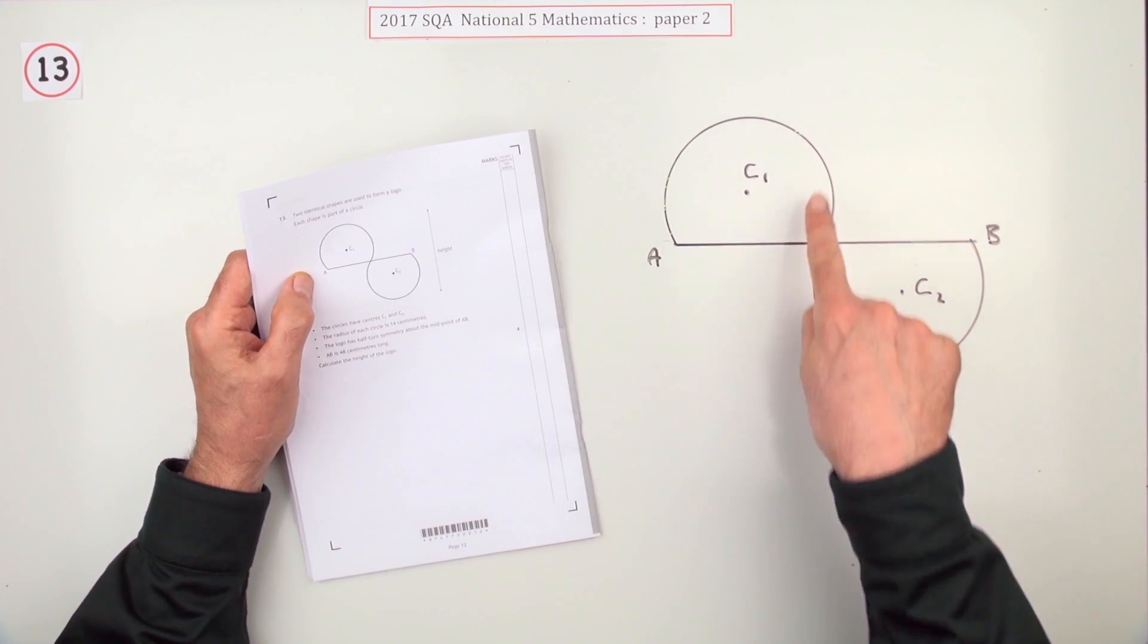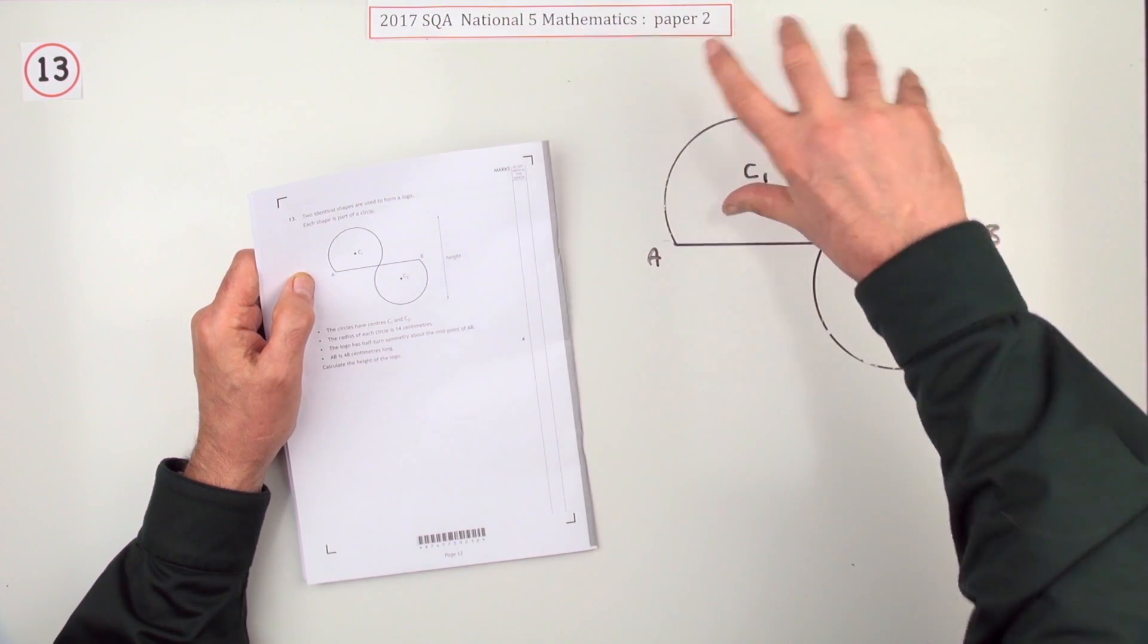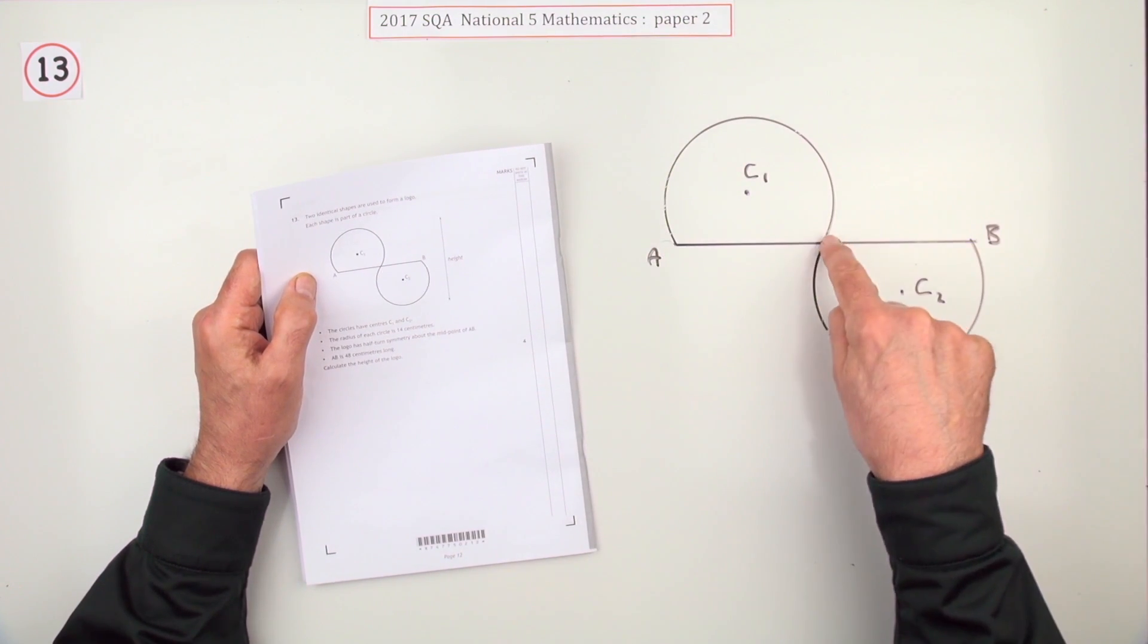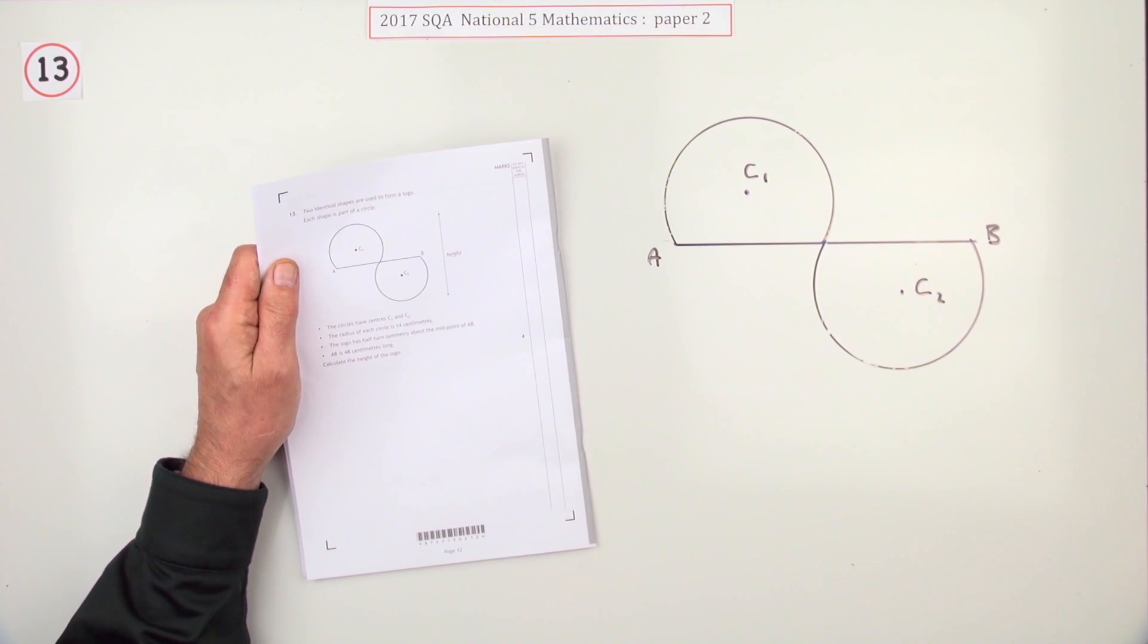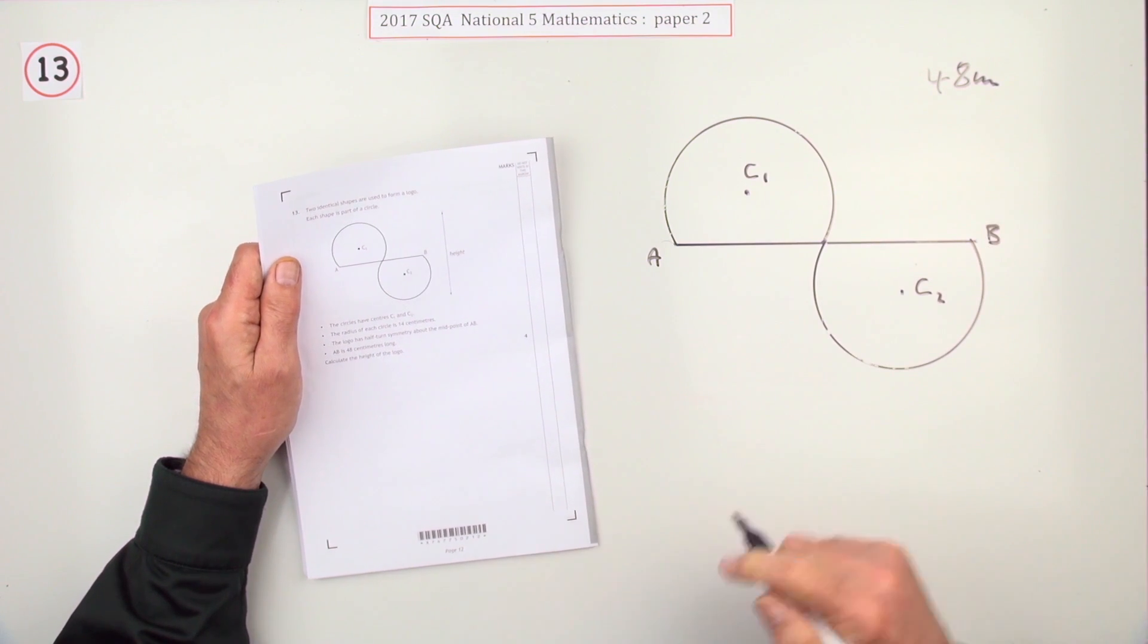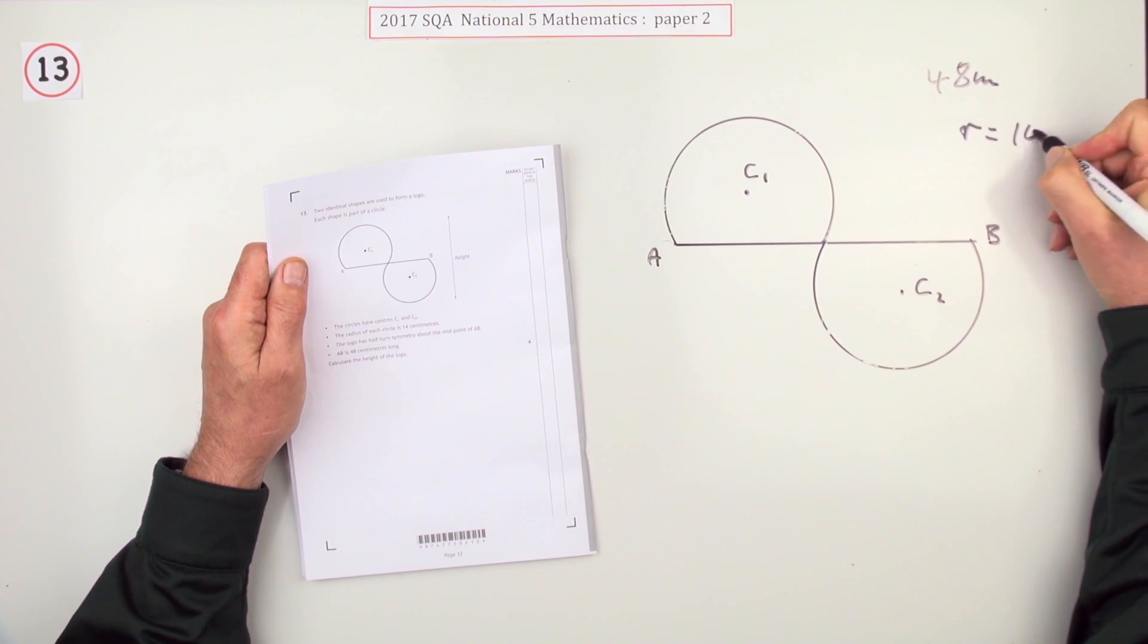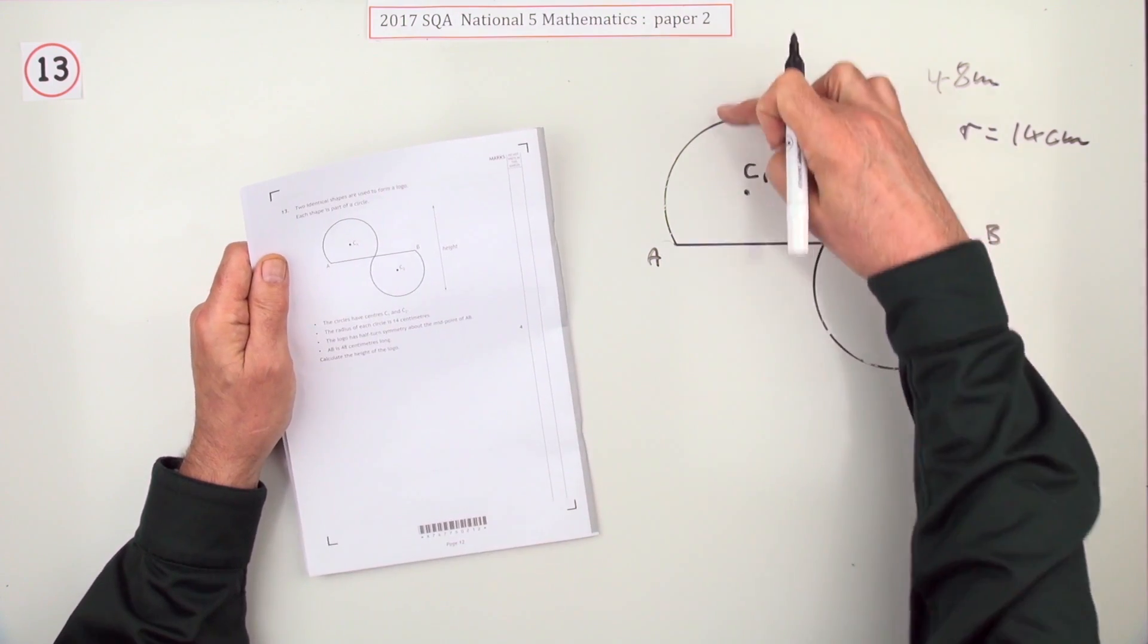Now what's it got? Two identical shapes have been used to form a logo. One has got half-turn symmetry, so that must be exactly the middle of line AB. And it says the line AB is 48 centimeters. Take a note of that, and the radius of the circle is 14 centimeters. Calculate the overall height.